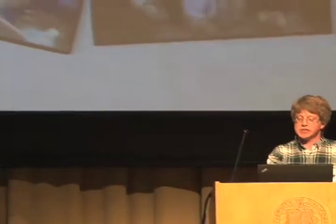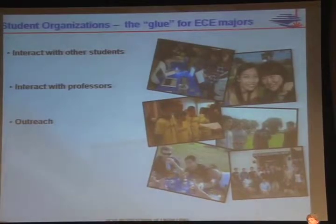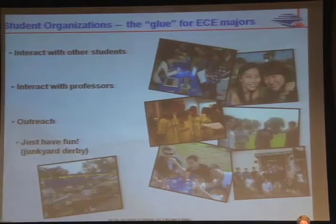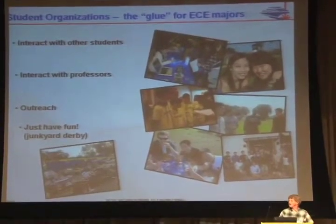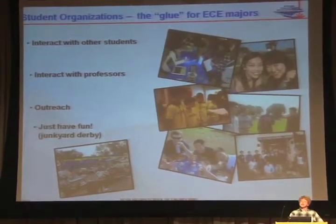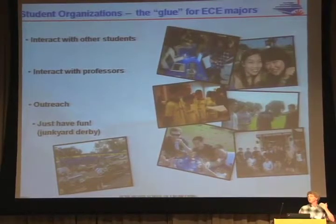The student organizations also provide the social glue for students here. You can interact with other students — these are pictures from the IEEE picnic last year. You can interact with professors — this picture is from a dinner after the Viacar competition. You can do outreach opportunities with community colleges and high schools. And you can just have fun — every year they throw a bunch of junk out in a parking lot and people make soap boxes and race them down a hill. Student organizations are another vehicle to interact both professionally and socially.